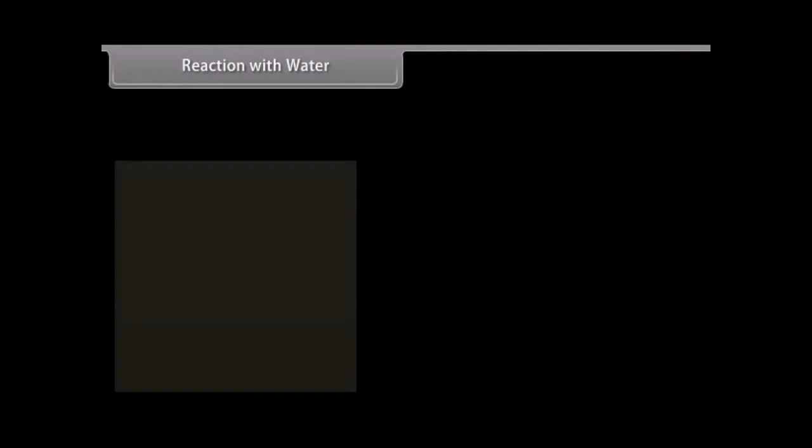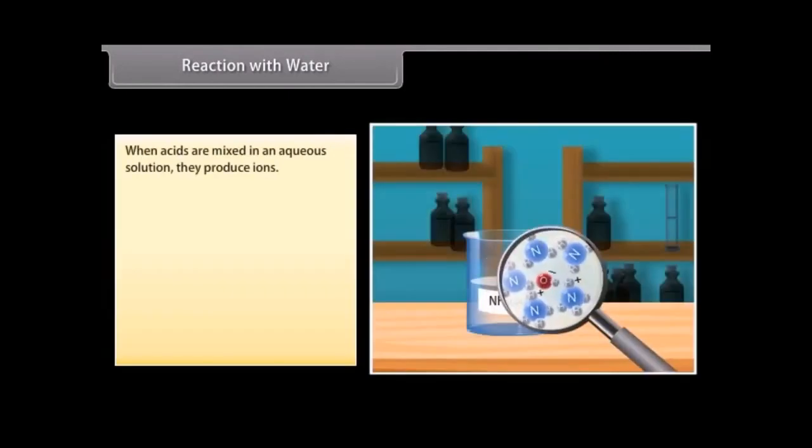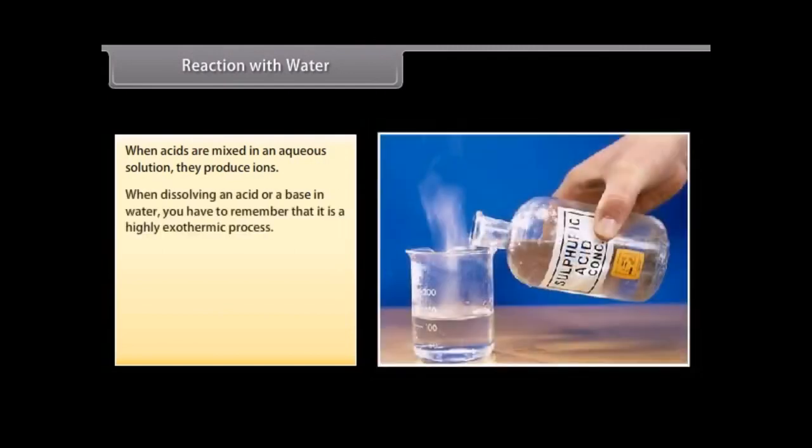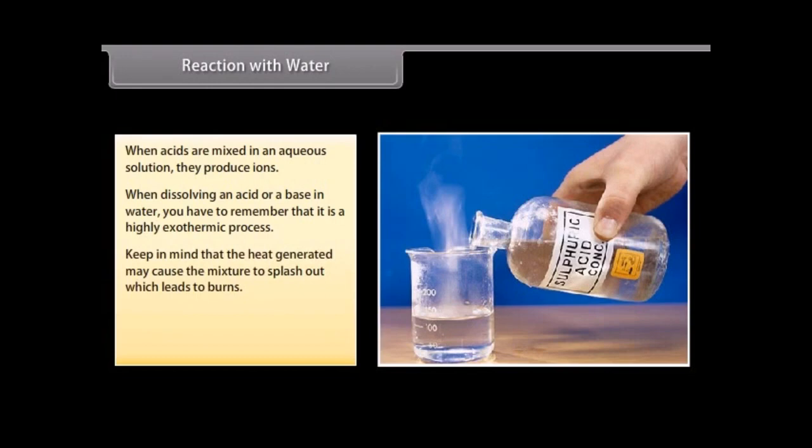Reaction with water. When acids are mixed in an aqueous solution, they produce ions. When dissolving an acid or a base in water, you have to remember that it is a highly exothermic process. While adding water to a concentrated acid, keep in mind that the heat generated may cause the mixture to splash out, which leads to burns. This may lead to the glass container breaking due to excessive local heating. When you mix an acid or base with water, it results in decrease in the concentration of ions per unit volume. This process is called dilution and you get diluted acid or base.